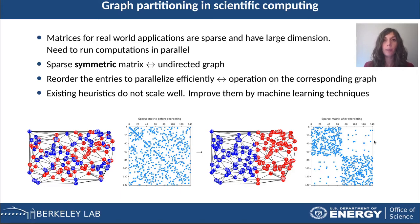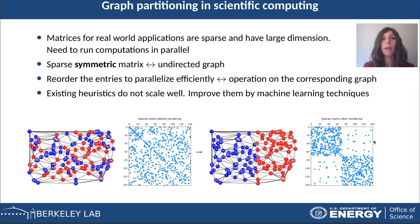If we want to parallelize efficiently the computations on these matrices, what we want to do is to reorder the rows and the columns of this matrix such that the resulting matrix is as close as possible to a block diagonal matrix. Performing this operation corresponds to performing certain operations on the corresponding graph that are called graph partitioning.